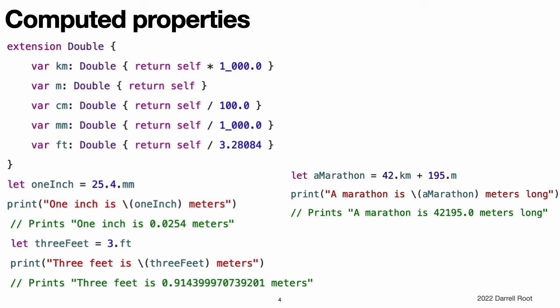These properties are read-only computed properties, and so they are expressed without the get keyword for brevity. Their return value is of type double and can be used within mathematical calculations whenever a double is accepted. Note, extensions can add new computed properties, but they cannot add stored properties or add property observers to existing properties.